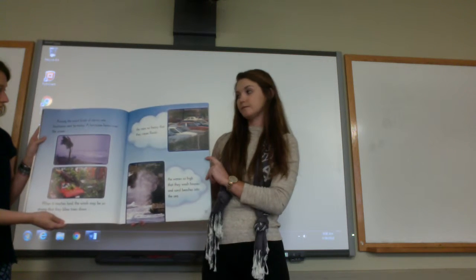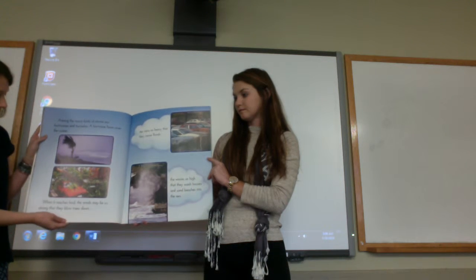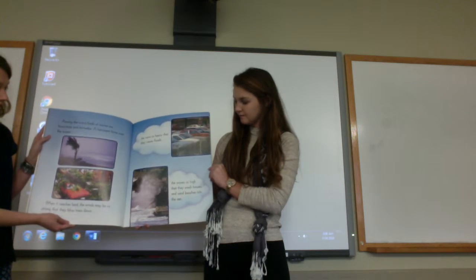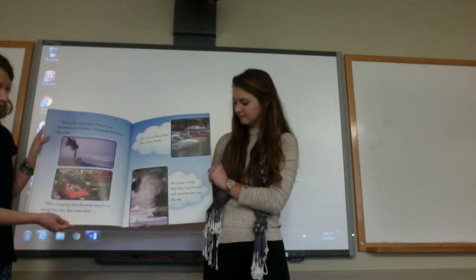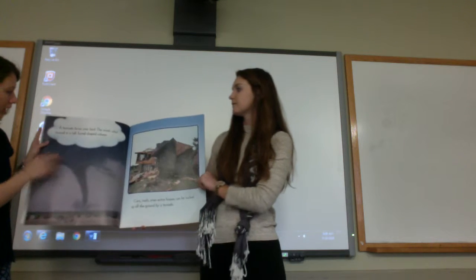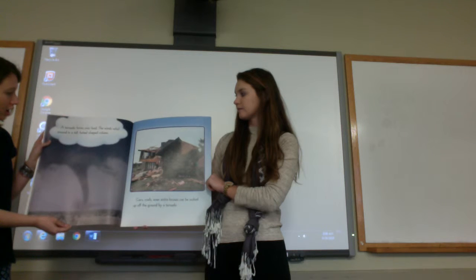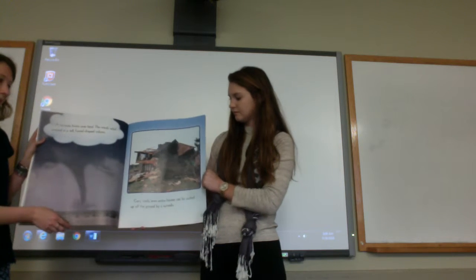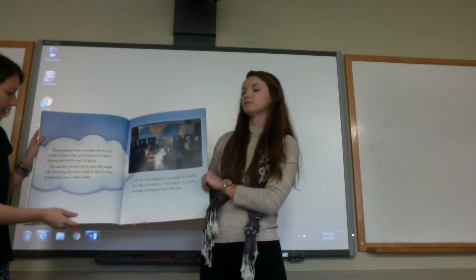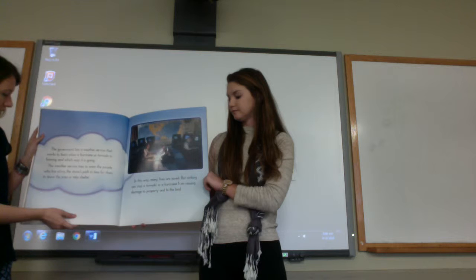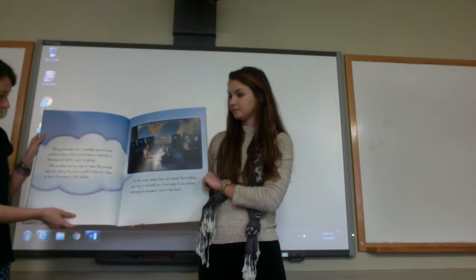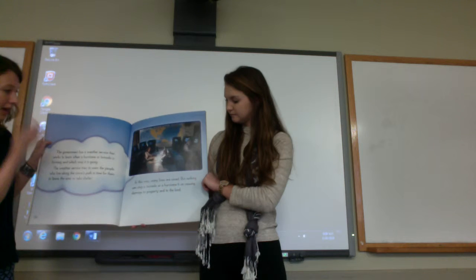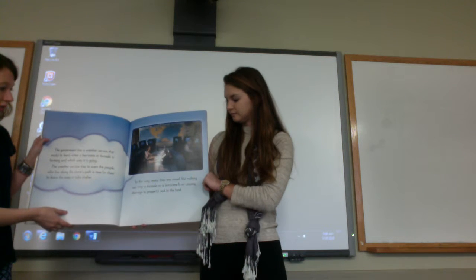Among the worst kinds of storms are hurricanes and tornadoes. A hurricane forms over the ocean. When it reaches land the winds may be so strong that they blow trees down, the rains so heavy that they cause floods, the waves so high that they wash houses and sand beaches into the sea. A tornado forms over land. The winds whirl around in a tall funnel-shaped column. Cars, roofs, even an entire house can be sucked up off the ground by a tornado. The government has a weather service that works to learn when a hurricane or a tornado is forming and which way it is going. The weather service tries to warn people who live along the storm's path in time for them to leave the area or take shelter. In this way many lives are saved, but nothing can stop a tornado or a hurricane from causing damage to property and the land.